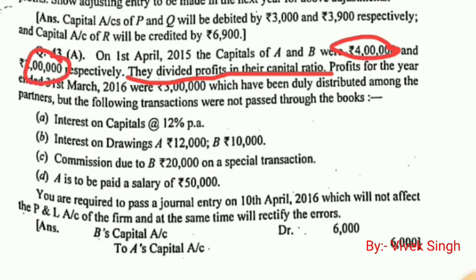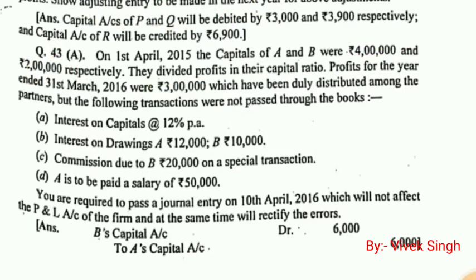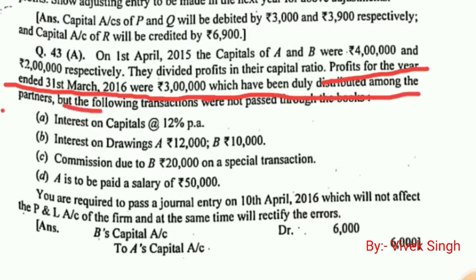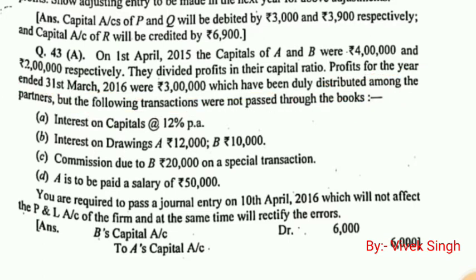So the profit sharing ratio is 2:1. The profit for the year ended 31st March 2016 was rupees 3 lakh, which has been duly distributed among the partners. However, the following transactions were not passed through the books — some transactions are not recorded in accounting.